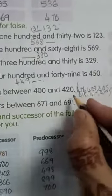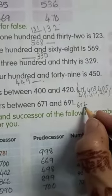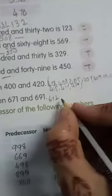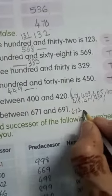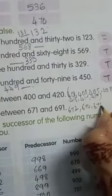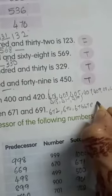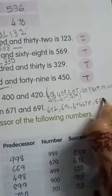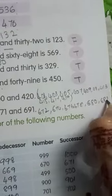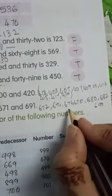Even numbers end with 2, 4, 6, 8, or 0. So the even numbers are: 672, 674, 676, 678, 680, 682 — like that you have to write all the way till 690.